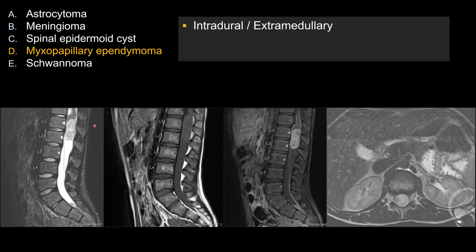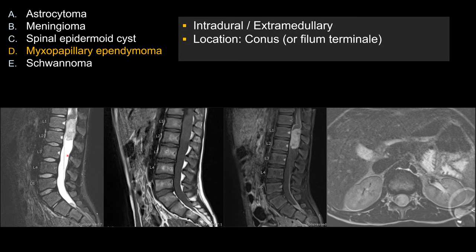First of all, you do notice that there is a mass region that occupies the spinal canal, which is intradural and extramedullary. You can see the conus has been pushed upwards rather than expanding from within, so extramedullary. And it's avidly enhancing. Its location is very typical of myxopapillary ependymoma, in that the vast majority of them occur either by the conus or along the filum terminale.